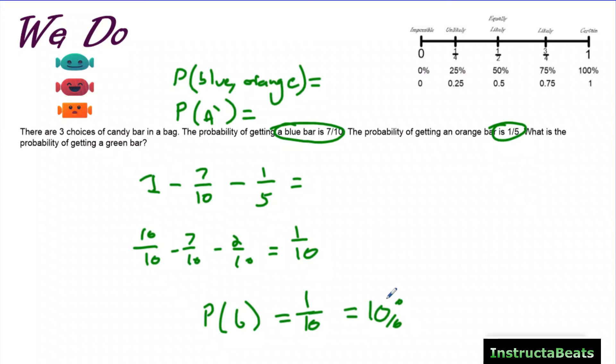There's a 10% chance that you will not get a blue bar or an orange bar. And if you don't get a blue bar or an orange bar, you're getting a green bar. Sometimes they don't even use the words complement of an event, but that's really what you're doing. You're trying to add up the probabilities and then subtract it, knowing that there's a 100% certainty or a 1 on our number line that you will pick a candy bar.